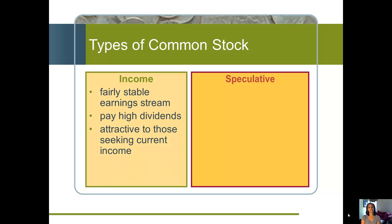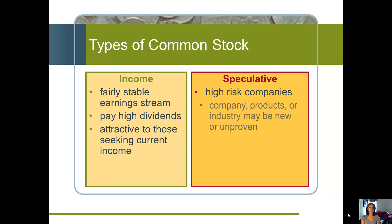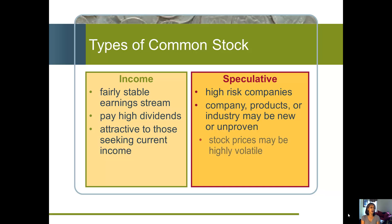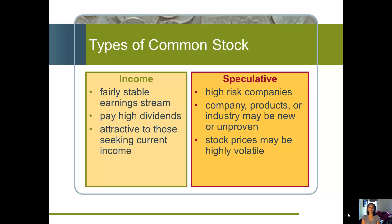There are also stocks we consider income stocks, where they pay fairly high dividends. That gives you current income. We buy those stocks because we like that high dividend yield and we're looking for an income stream. Typically, older people living on a fixed income like this type of investment because it adds to that fixed income.